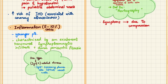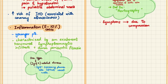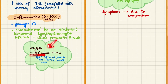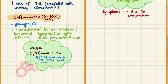A second cause of AAA, seen in only 5–10% of cases mostly in younger patients, is inflammation. It is characterized by a transmural lymphoplasmacytic infiltrate of the abdominal aortic wall. One subtype is IgG4-related disease, where plasma cells expressing IgG4 antibodies infiltrate the aortic wall.